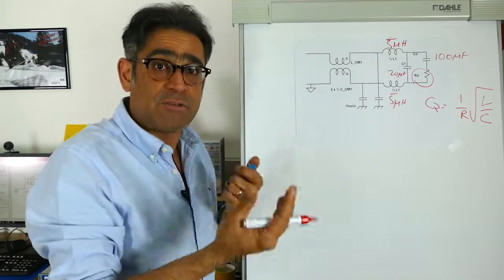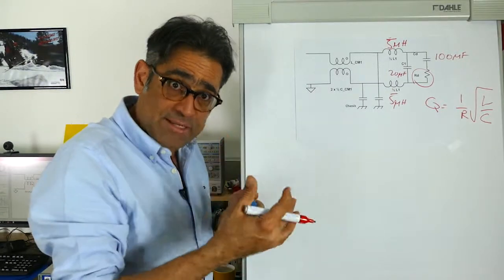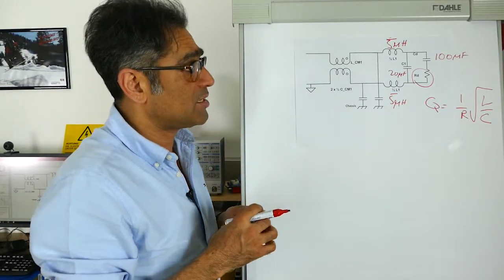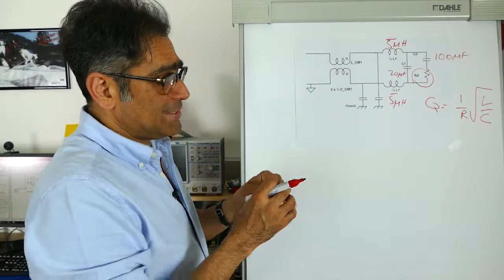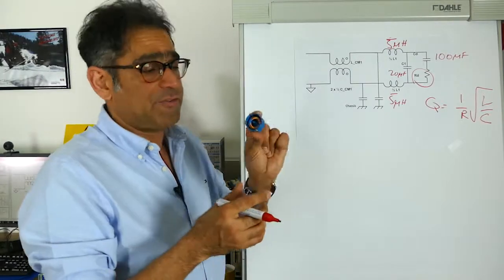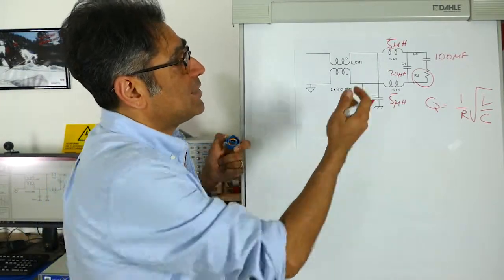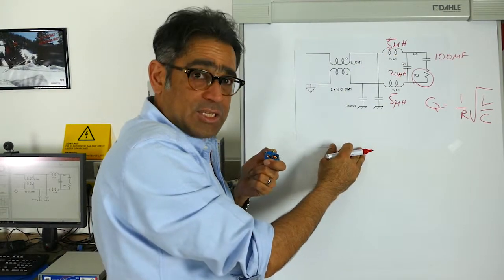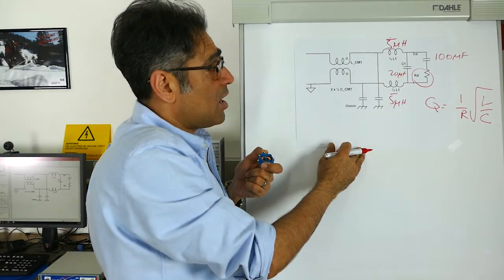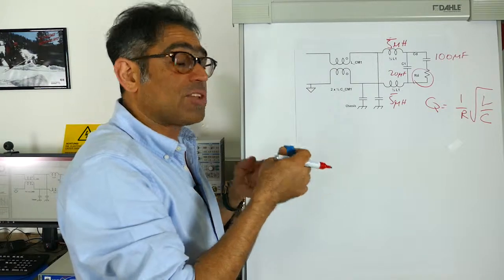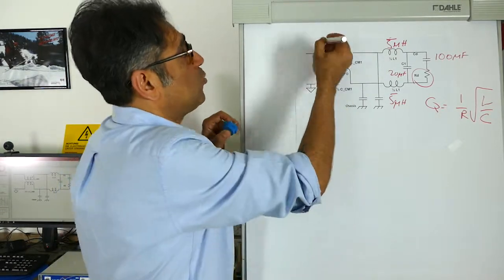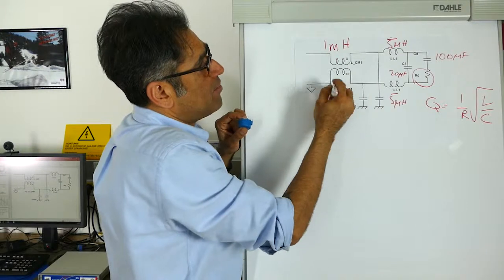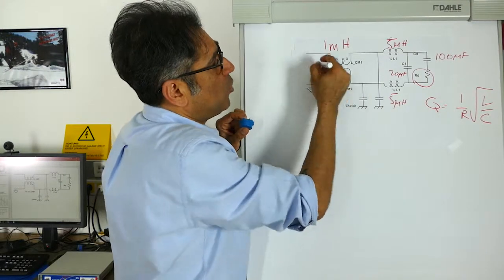If the size isn't right then I have to reiterate, and that is why filter design for EMC is an iterative process. For simplicity, let's say I find a common mode choke that has 10 microhenries of leakage inductance, and the one that has that much leakage inductance is 1 millihenry. So I end up with 1 millihenry worth of common mode choke.